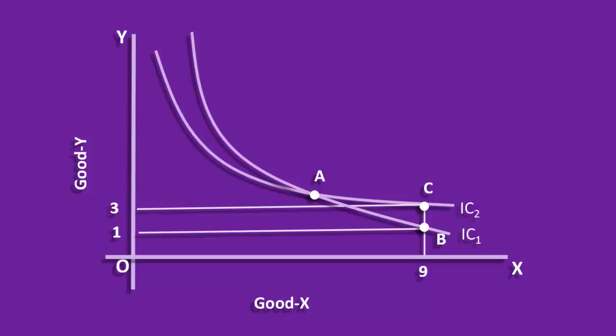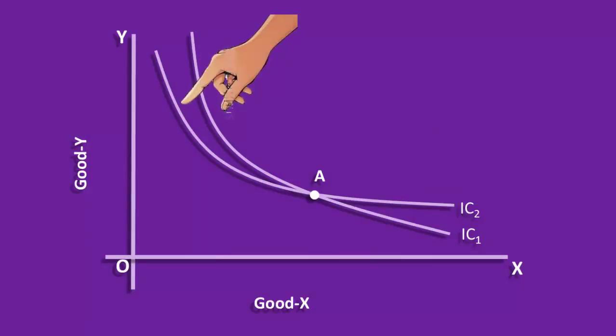Even if we accept in principle that the two can cut, then we have to accept IC2 offering three different levels of utility. Its upper segment gives less utility than IC1. Exactly at point A, its utility equals the utility of IC1. Its lower segment's utility is higher than that of IC1. This idea cuts the very root of the indifference curve analysis. So, for the above said reasons, indifference curves will never cut or touch each other.